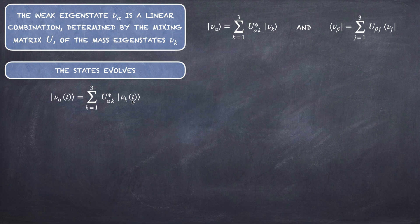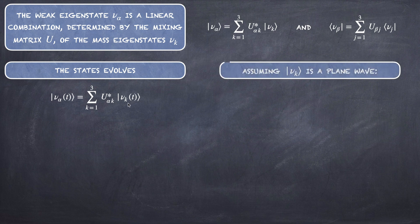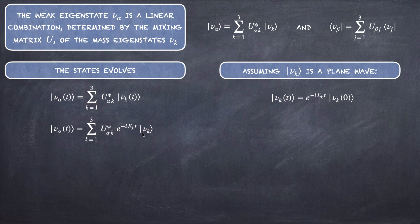These states evolve in time. The weak eigenstate ν_α(T) is a linear combination of ν_K(T), and we assume a plane wave treatment: ν_K evolves as e^{−iE_K T} ν_K(0). As a consequence, ν_α(T) equals the summation over K of U*_αK times the energy exponential multiplied by ν_K.